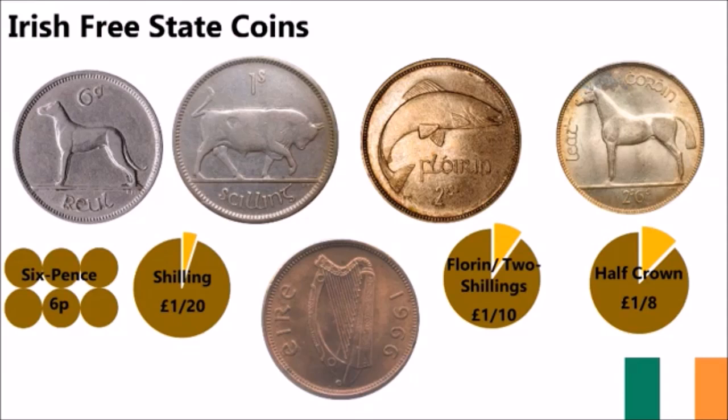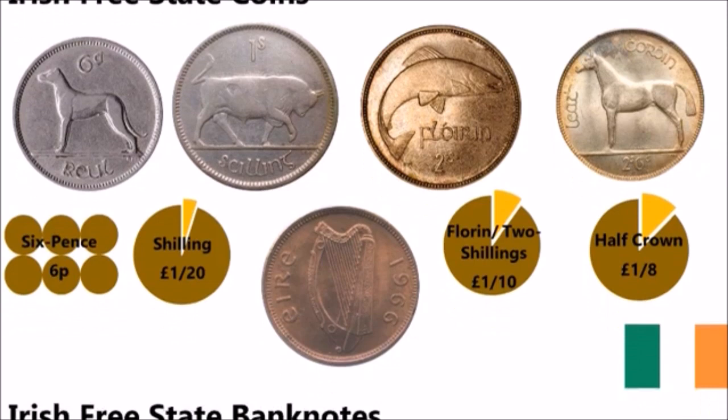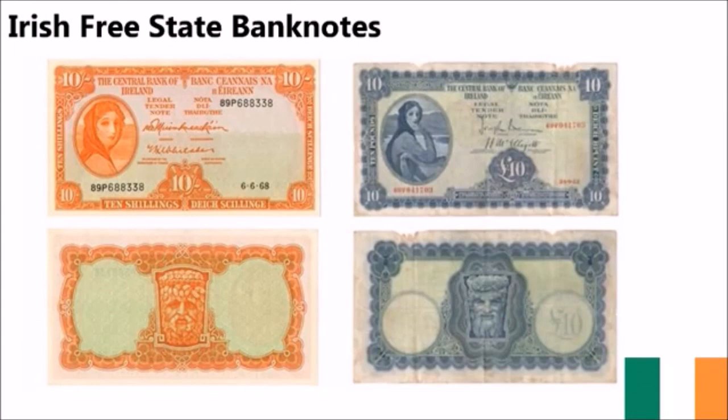The Irish Free State also minted their own banknotes between 1922 and 1937, in two series. The first, called the Lady Lavery series in 1928, was designed by Lady Lavery, also known as Hazel Lavery, a British-American painter. She was invited by the Irish Free State to be the new national personification of Ireland, replacing Hibernia. These featured only two designs spread across seven notes, with the front featuring Lady Lavery in two variations, and the back featuring Irish river masks.